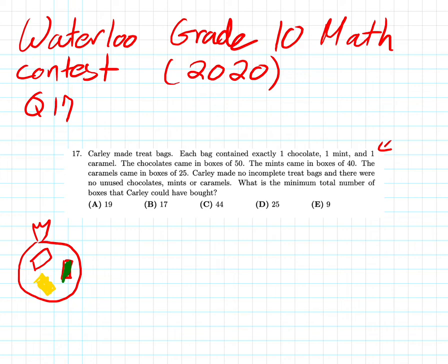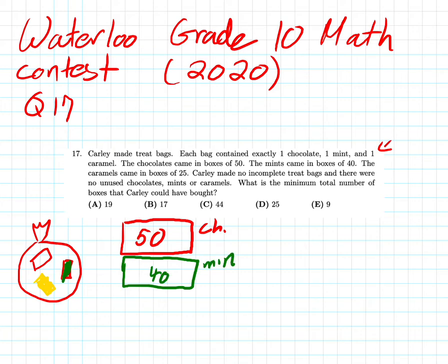The next thing that we need to know is that our chocolates, we'll do chocolates in red here, they're in boxes of 50. Our mints came in boxes of 40. I think of mint green, that's why I'm going to use green here. And our caramels came in boxes of 25. We'll put it short from CAR.